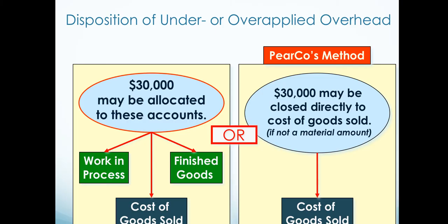So now what do we do with that $30,000? Whether it's under-applied or over-applied, it can be allocated to the different accounts where it originated from — which were work in process, cost of goods sold, and finished goods — or it can be closed out directly to cost of goods sold. The origination flows from work in process to finished goods to cost of goods sold, so this distributes it over all of them.